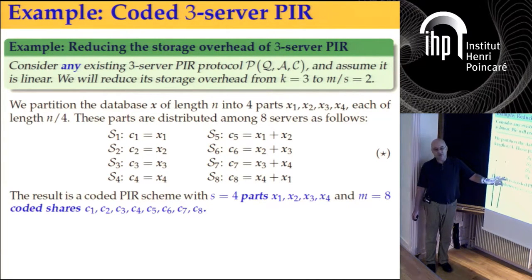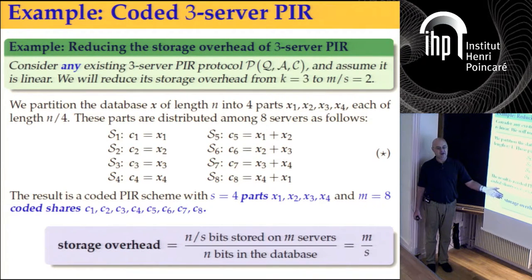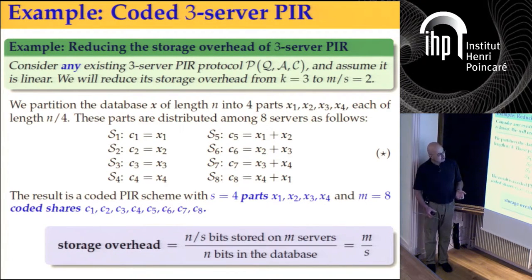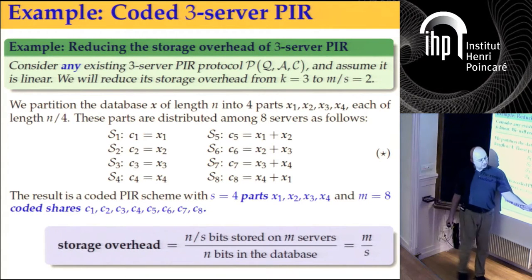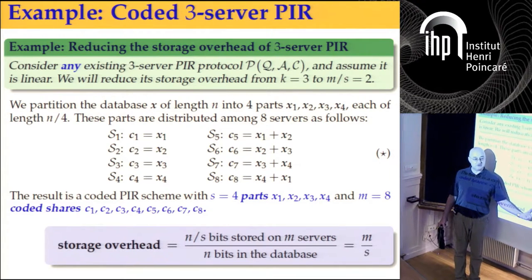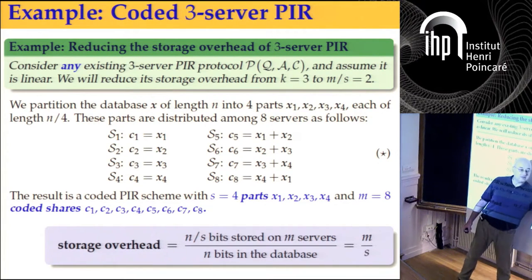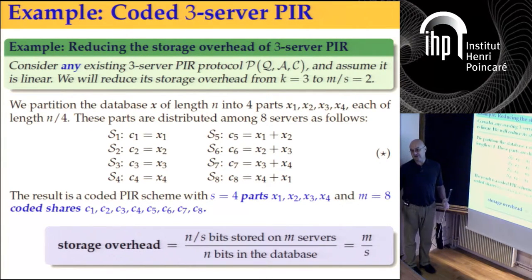The first four servers will just store the four parts. The other four will store some linear combinations of the parts. This results in what I call a coded PIR scheme with S equal four parts and M equal eight coded shares — also equal to the number of servers. The storage overhead is M over S.